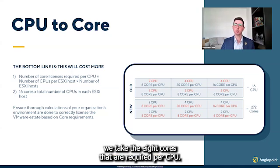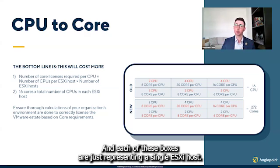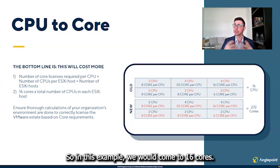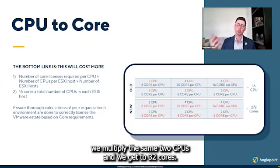If we take the first calculation, we take the eight cores that are required per CPU, multiply that by the two CPUs. Each of these boxes is representing a single ESXi host. So in this example, we would come to 16 cores. If we then look at the second calculation, we take the 16 cores, multiply by the same two CPUs, and we get to 32 cores. So for this example, we'd be required to implement the second calculation.